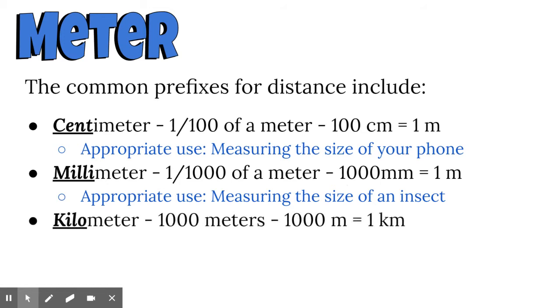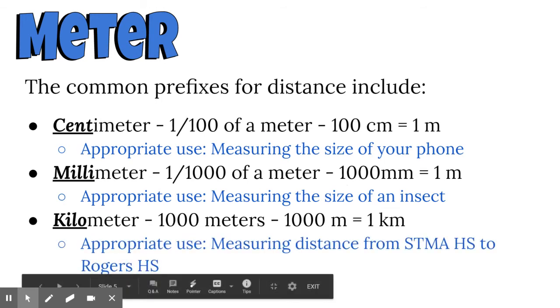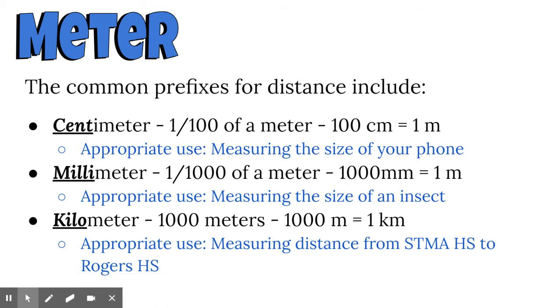Another one we use a lot is the kilometer. Kilo means it's a thousand times bigger than the base unit. There are a thousand meters inside of one kilometer. This is really appropriate for distances that we might drive. If you had to drive from STMA to Rogers, that would be a good example of when to use kilometers. If you're going for a run, kilometers would probably be a pretty good unit.